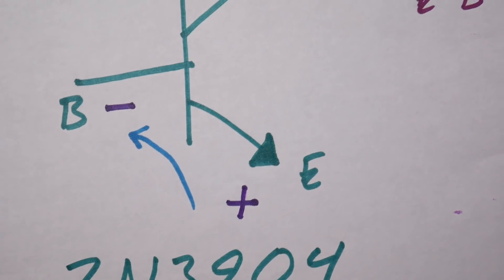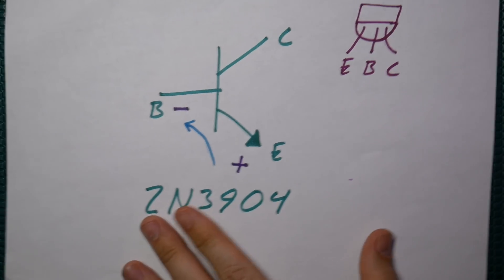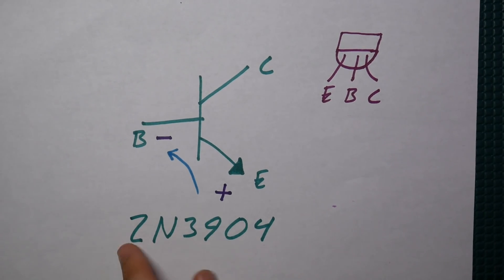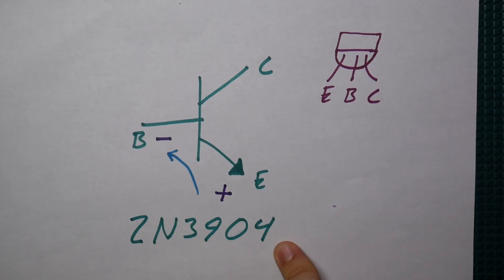So if we just take a quick look here at the NPN transistor, and by the way, these are 2N3904 transistors, which I have literally hundreds of, maybe even thousands. This is a standard NPN bipolar junction transistor BJT.